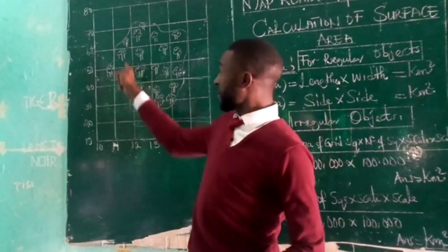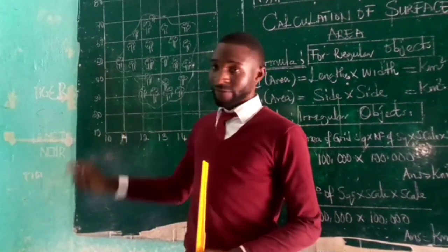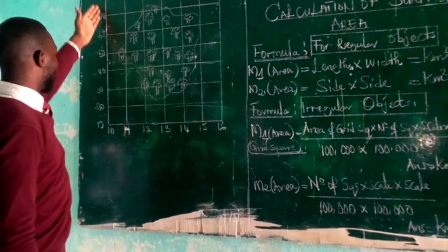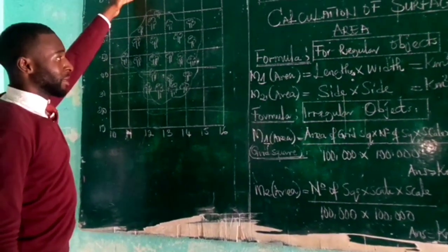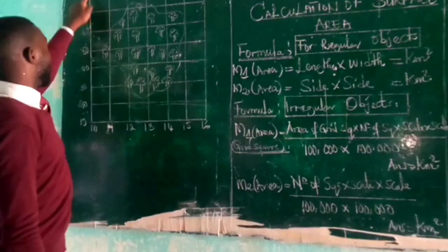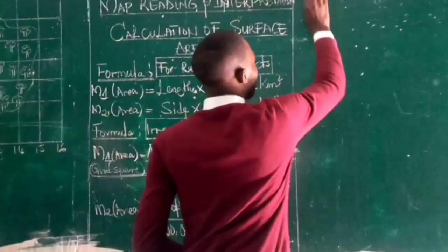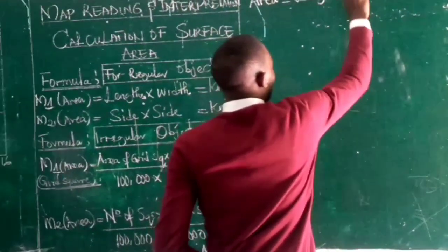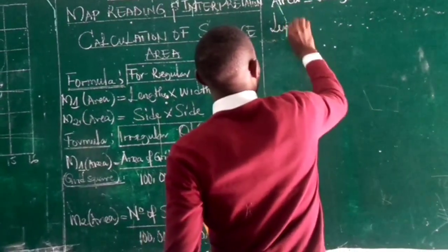We are not referring to this area here — we are talking about the surface area of this map. When we look at this map, we discover that one side is longer than the other. So this longer side is the length and the other side is the width, which means I am going to use the first method: length times width. The first thing I need to do is write the formula down: Area equals length times width.